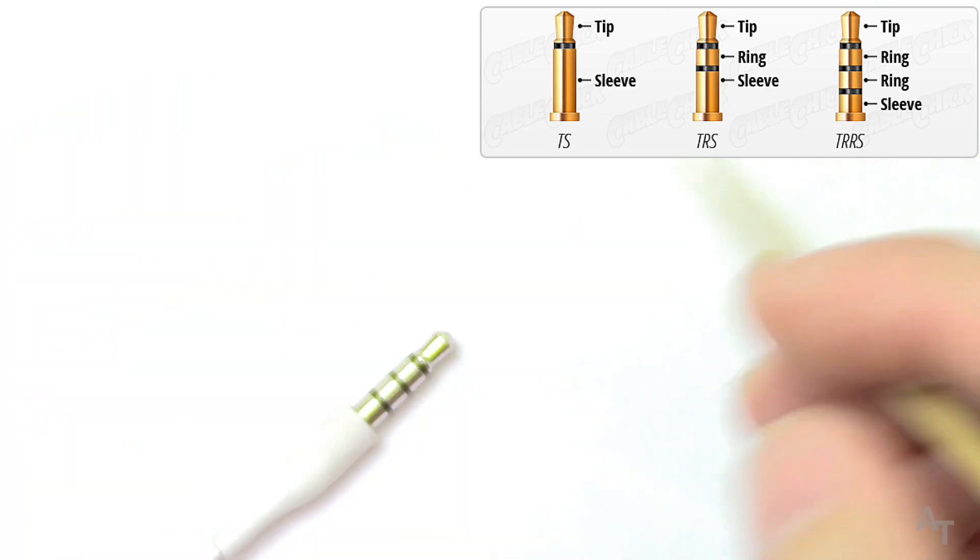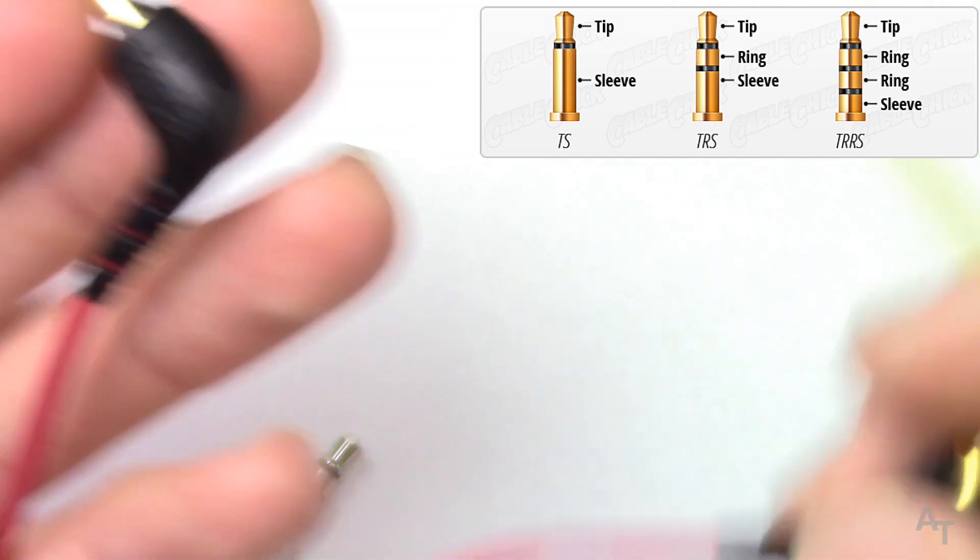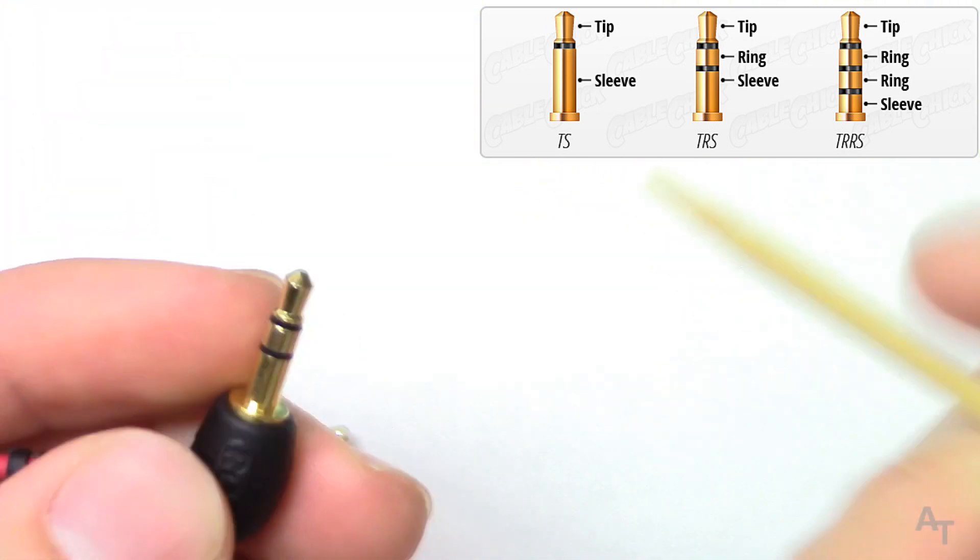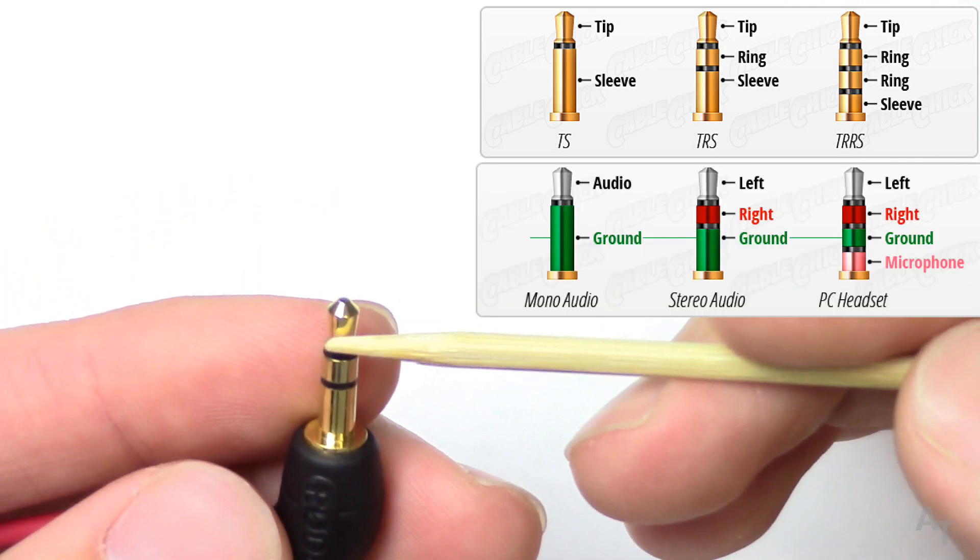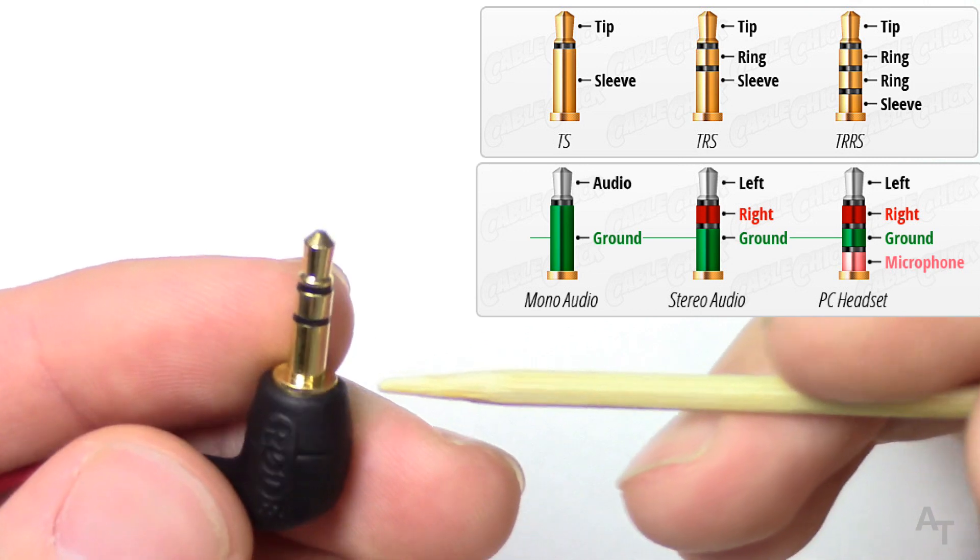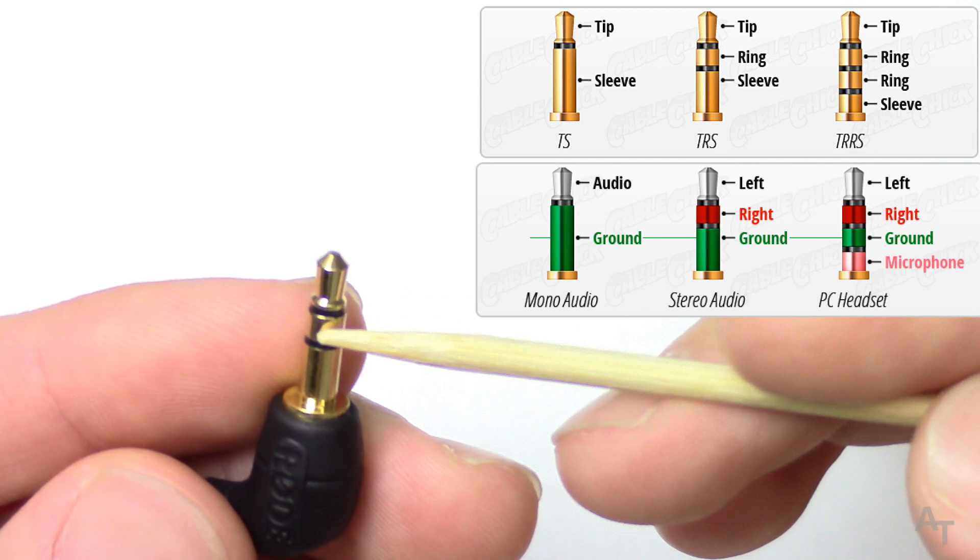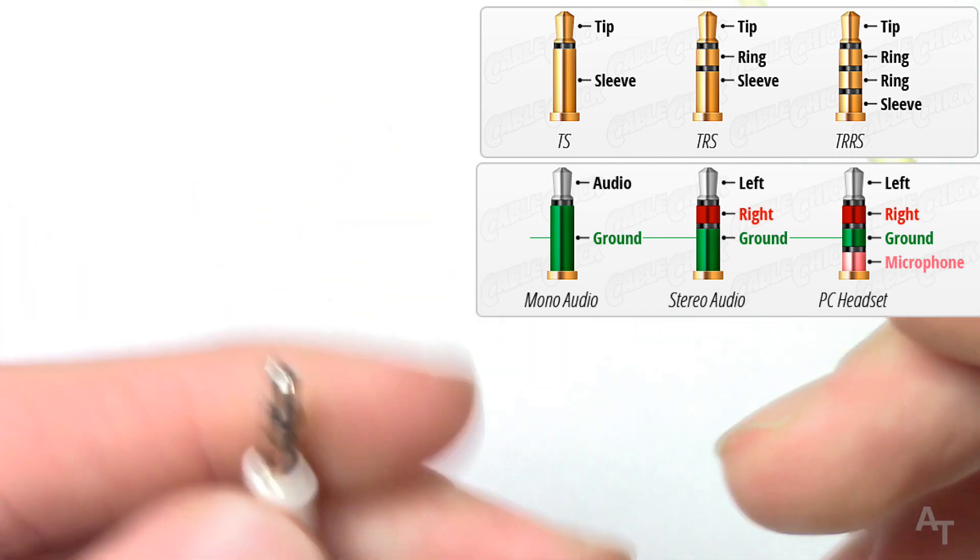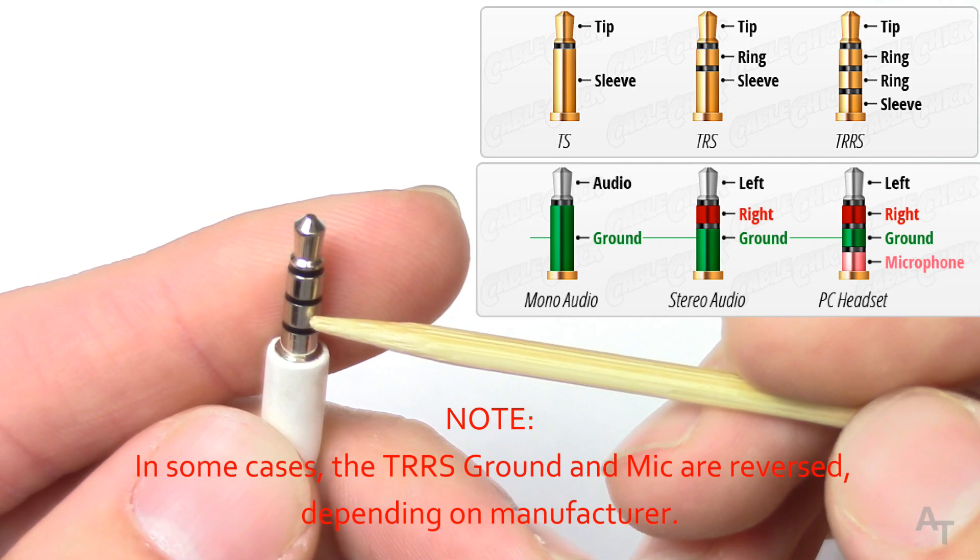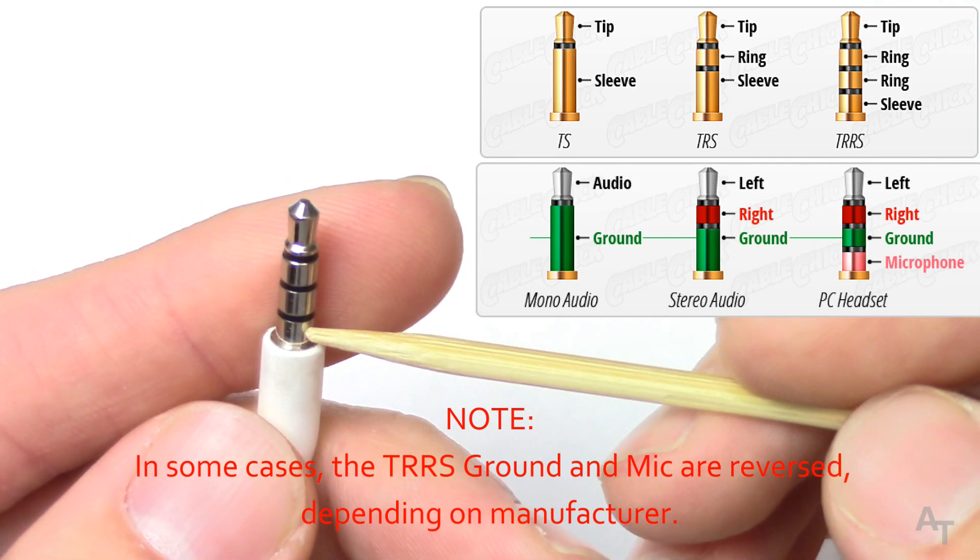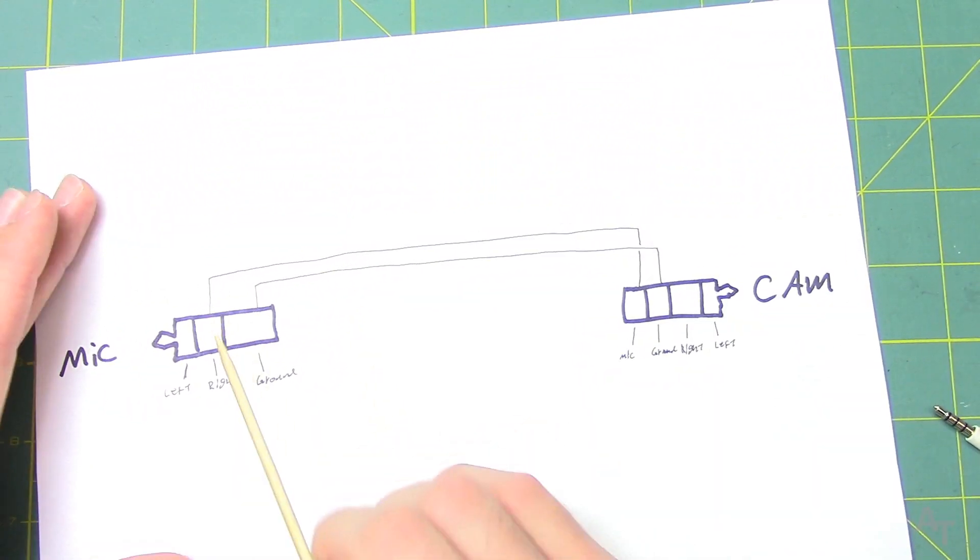TRS stands for tip ring ring sleeve. What we have over here, which is what comes out of the Rode, is the cable for the road. What's very common as an audio jack is you have left audio, right audio, and ground. So you have tip, ring, sleeve - TRS. And over here you have left audio, right audio, ground, and then microphone.